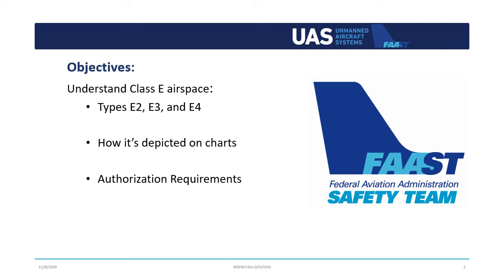While this may seem straightforward, how Class E airspace is designated can be particularly confusing for drone pilots as well as manned pilots. But there's some good news. By the end of this presentation you will know what the different types are, how they affect your drone operation, how to spot them on an aeronautical chart, and when you'll need FAA authorization to operate within them.